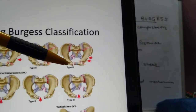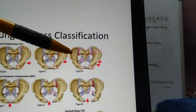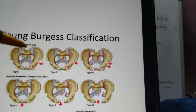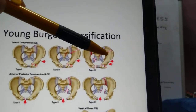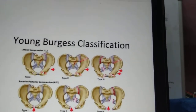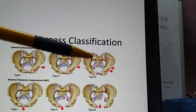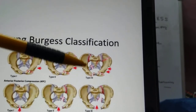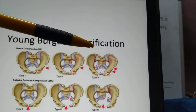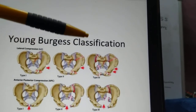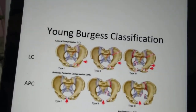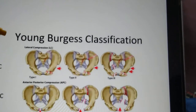LC Type 3 is a windswept injury, in which on one side there will be a lateral compression Type 1 or Type 2 injury, while on the contralateral side there will be an anterior-posterior type of injury — essentially an open book injury. So one side has rami fractures with sacral impaction or SI joint fracture dislocation, and the contralateral side has an open book injury.